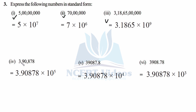For the fourth number: write 3.90878 — put your decimal here, then count digits towards the right: 1, 2, 3, 4, 5 — so 10 raised to power 5. In general, count all the digits — 3, 4, 5, 6 — and subtract 1, giving 6 minus 1 equals 5. Put the decimal after the leftmost digit. In this way you get your standard form.